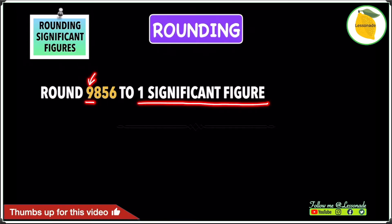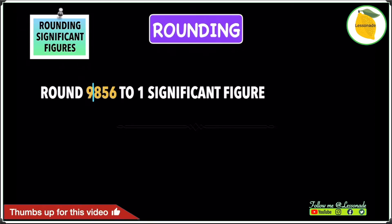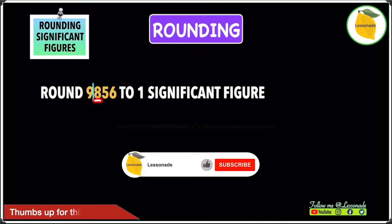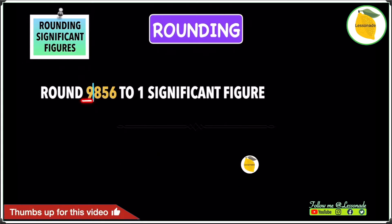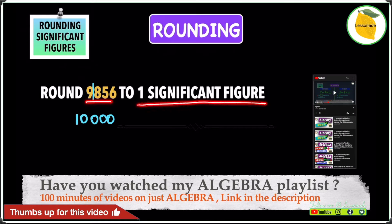So once you've done this, the next thing you're going to do is draw a line next to the significant figure you're rounding to. In this case, we're rounding to the first one. Once you've drawn a line after that specific significant figure, look at the digit after the line, which is 8. If the digit after the line is 5 or above — and 8 is above 5 — you're going to add 1 to the digit before the line, which is 9. Adding 1 to 9 gives you 10, and for the remaining digits after the line, you replace them with zeros. So 9,856 rounded to the first significant figure is 10,000.